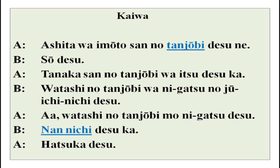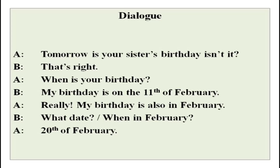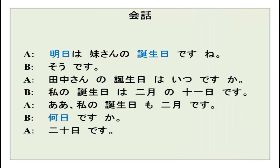Ashita wa imoutosan no tanjoubi desu ne. Sou desu. Tanaka-san no tanjoubi wa itsu desu ka? Watashi no tanjoubi wa nigatsu no juuichinichi desu. Watashi no tanjoubi mo nigatsu desu. Nan nichi desu ka? Hatsuka desu. The new word here is tanjoubi — birthday. An English translation is provided and you can look up the romanized dialogue if you get stuck. Get used to kanji characters and hiragana in the script.